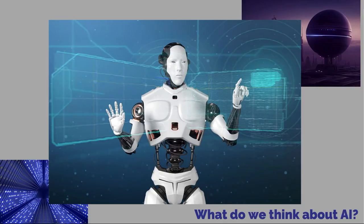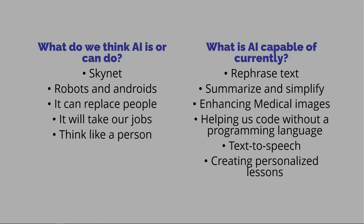So far we've talked about how AI was created. What does that mean for how AI performs and what do we think about AI right now? A lot of people think about Skynet, Terminator — is AI going to kill us all? We also think about robots, androids, maybe Data from Star Trek. More personally, we think about how AI can replace people and take our jobs, and that AI thinks and reasons like a person. Eventually some of these may be things AI is capable of — though in the case of Skynet we really hope not. What is it that AI currently does?